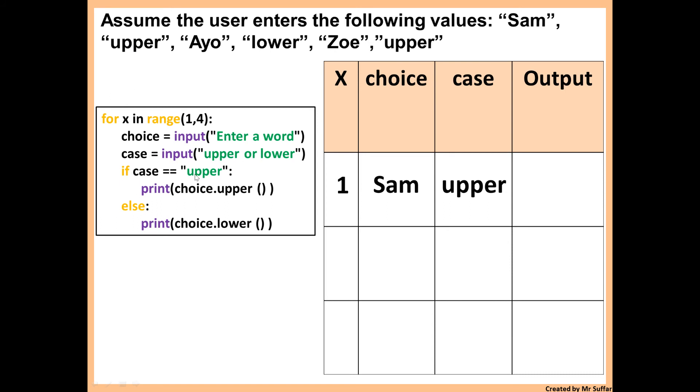It says if case is equal to upper, print choice.upper. So this will print the choice, but in uppercase. Because the upper function forces the variable, or the values of the variable, to uppercase. So the output will be Sam, all in uppercase.